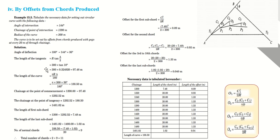Up to this point, the concept is from previous methods — in those methods too we calculated length of curve, tangent length, and chainages. This method has only 2–3 additional steps. Now let's understand what a chord is. A chord is any distance taken along the curve — the first, second, third, fourth — any distance on the curve is a chord.